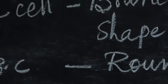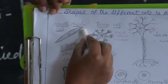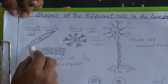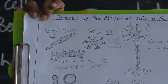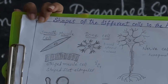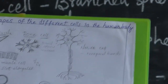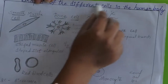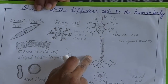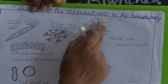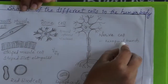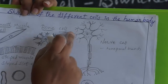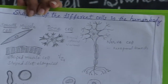Coming to muscles — this is called smooth muscle and this is striped muscle. These muscles are flat and elongated. Next, coming to the nerve cell. This is called a nerve cell. The nerve cell shape is like six sides — you can call it hexagonal — and it is branched like a tree. So you can say hexagonal, branched shape.